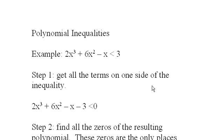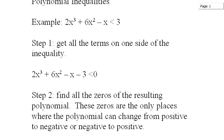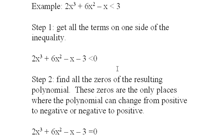Our first step is to get all the terms on one side. When we do that, this changes the question a little bit. Now we're asking: when is the polynomial 2x cubed plus 6x squared minus x minus 3 less than 0? Or when is this polynomial negative?